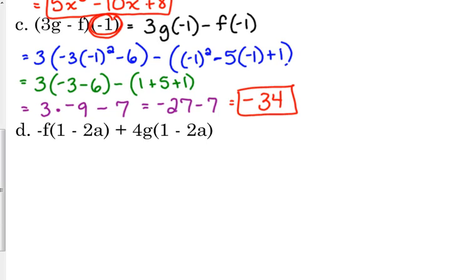We have negative f of 1 minus 2a. Again, we're not multiplying f by this expression, 1 minus 2a. We are plugging that expression into our f function. And then the same thing for 4g.